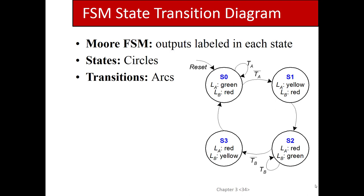The 11 states represent every possible amount of money someone could insert, plus one extra credit state needed when there's more change to release than can be given in one cycle. To actually implement this circuit, you'd assign state values to each state, build the next-state table, build the output logic, and then you could implement it on a breadboard with logic gates.